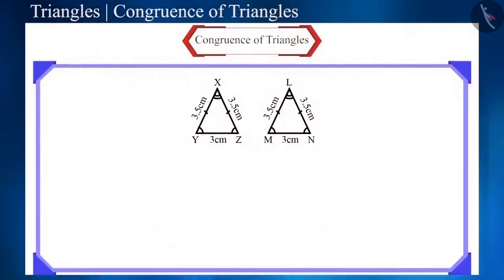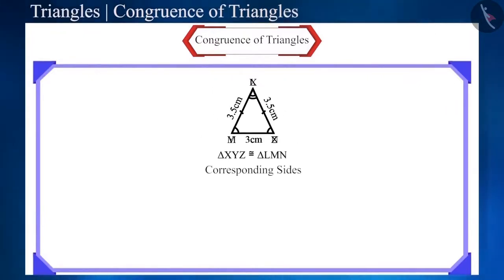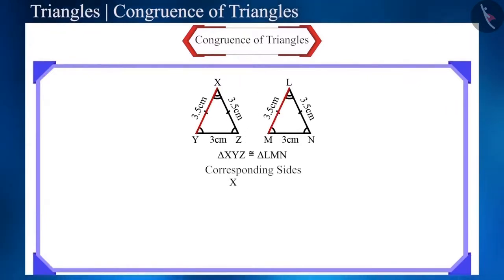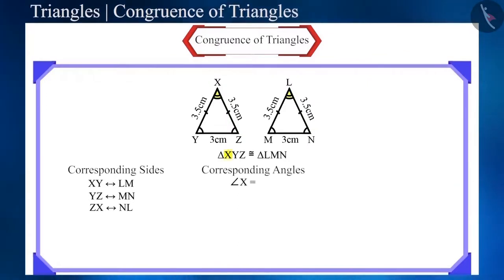Here, it is given that triangle XYZ is congruent to triangle LMN. Side XY covers side LM, side YZ covers side MN, and side ZX covers side NL. And we represent it this way. Angle X covers angle L, angle Y covers angle M, and angle Z covers angle N. We write it this way.